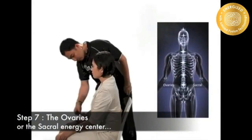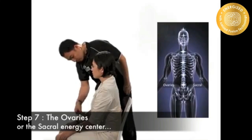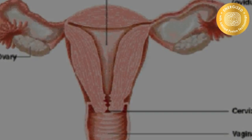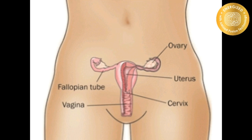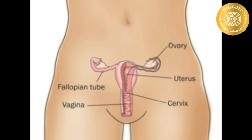Step 7: The ovaries, or the sacral energy center. The ovaries are a pair of oval or almond-shaped glands that lie on either side of the uterus and just below the opening of the fallopian tubes. They produce eggs and ova, as well as female sex hormones called estrogen and progesterone.